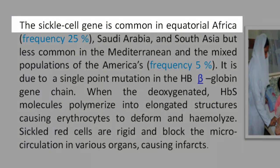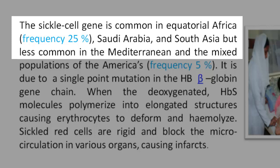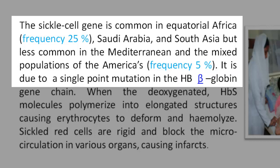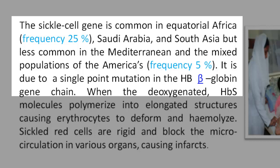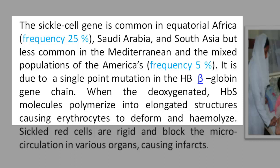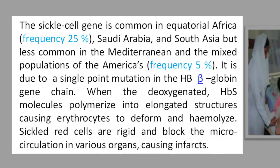Reading 1. The sickle cell gene is common in Equatorial Africa, frequency 25%, Saudi Arabia, and South Asia, but less common in the Mediterranean and the mixed populations of the Americas, frequency 5%. It is due to a single-point mutation in the HB globin gene chain. When the deoxygenated HBS molecules polymerize into elongated structures, causing erythrocytes to deform and hemolyze, sickled red cells are rigid and block the microcirculation in various organs, causing infarcts.